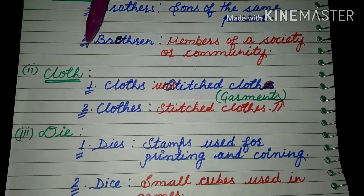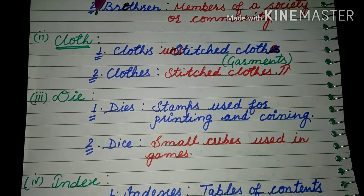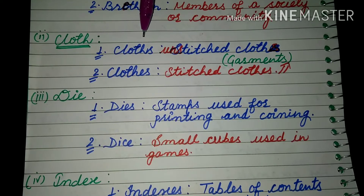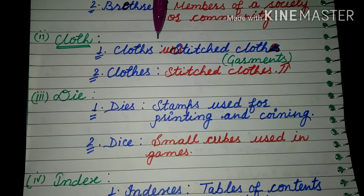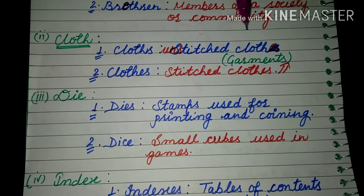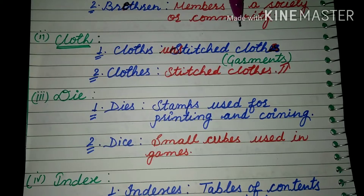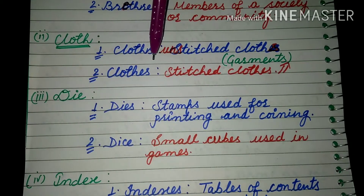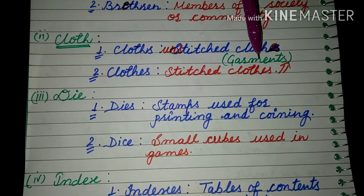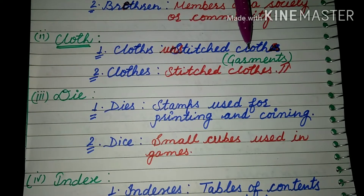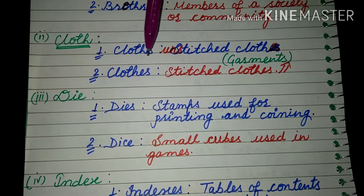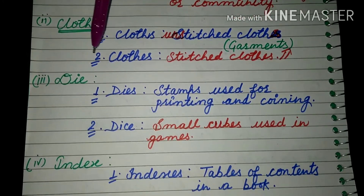Next is 'cloth'. Have you heard about this word? The first plural is 'cloths', meaning unstitched cloths — cloth that has not been sewn. Another plural is 'clothes', meaning stitched cloths. You can say garments — ready-made clothes — their plural is 'clothes'.